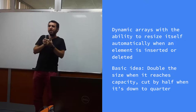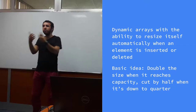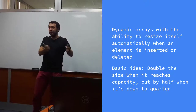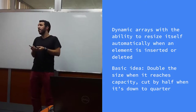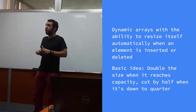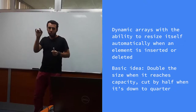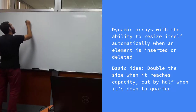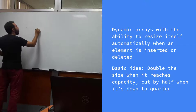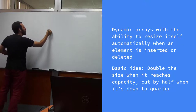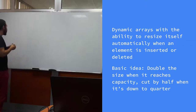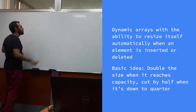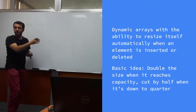If you halve the size at 50% occupancy instead of 25%, you risk thrashing: if you're at 50% and remove one element, you halve; then insert one, you're full and double; then remove one, you halve again — you're rescaling all the time. Rescaling is costly because elements are at consecutive memory locations. Let's say our size is eight and we have indices with elements placed inside.